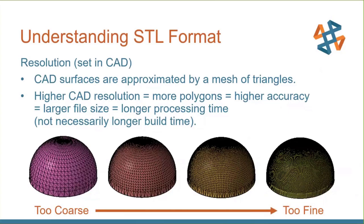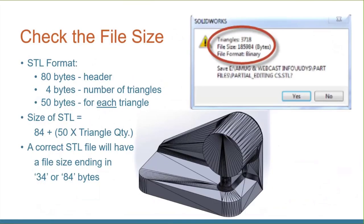CAD resolution is important because you'll only build parts as good as your model. If your CAD file is too coarse, your model will come out looking coarse. You can also go too fine where the file becomes huge. You can check your STL file — by the last two digits, 34 or 84, you can tell if the file is valid. Because of the number of headers and bytes per triangle, a valid file will always end in 34 or 84; if it doesn't, you have a problem.